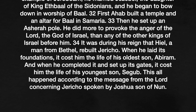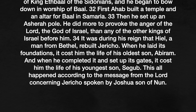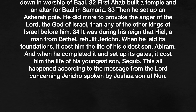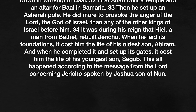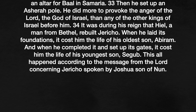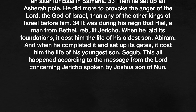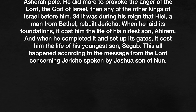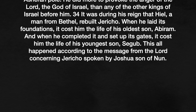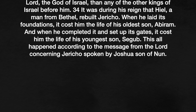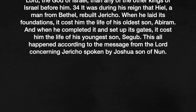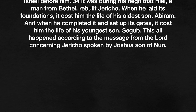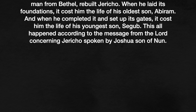It was during his reign that Hiel, a man from Bethel, rebuilt Jericho. When he laid its foundations, it cost him the life of his oldest son, Abiram, and when he completed it and set up its gates, it cost him the life of his youngest son, Segub. This all happened according to the message from the Lord concerning Jericho, spoken by Joshua, son of Nun.